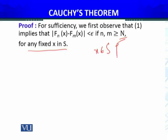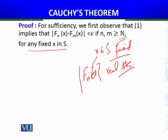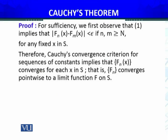जब x belongs to S fixed करेंगे, तो sequence f_n(x) real numbers की sequence होगी। यह sequence Cauchy condition satisfy कर रही है। तो real numbers का Cauchy's convergence criterion apply होगा — therefore, f_n(x) converges for each x in S। यह हर x के लिए true है। I have uncountably many sequences of real numbers which all satisfy this condition, and all these sequences of real numbers are convergent by Cauchy's criterion — as discussed in Analysis 1। That is, f_n converges pointwise to a limit function f।